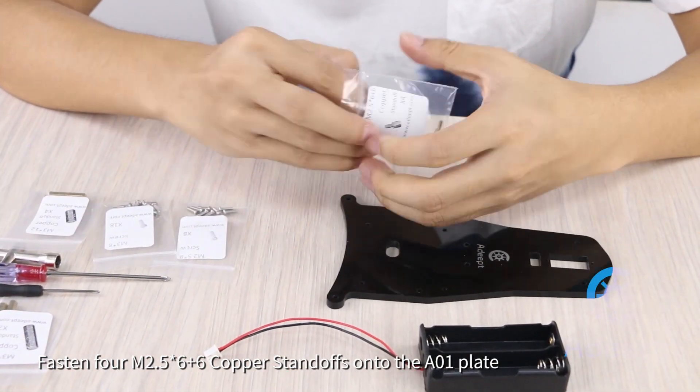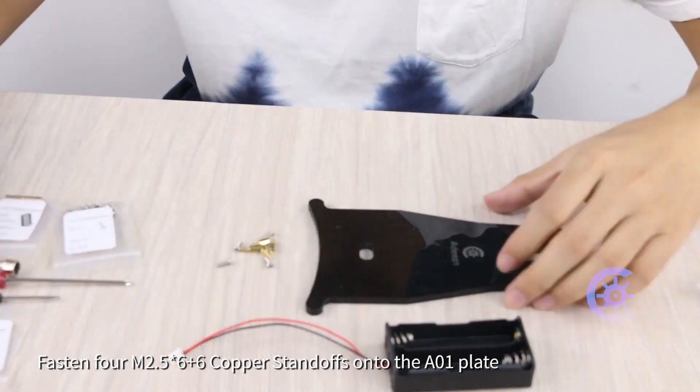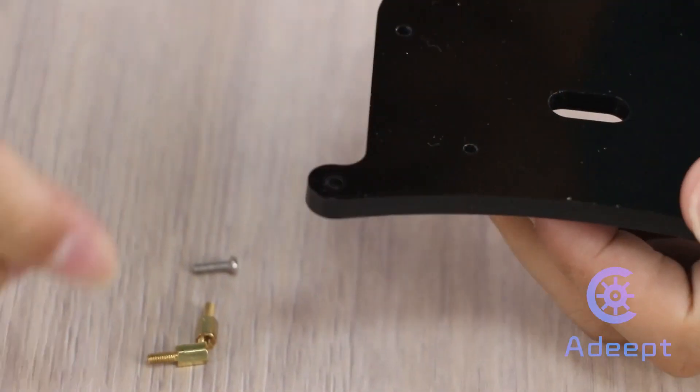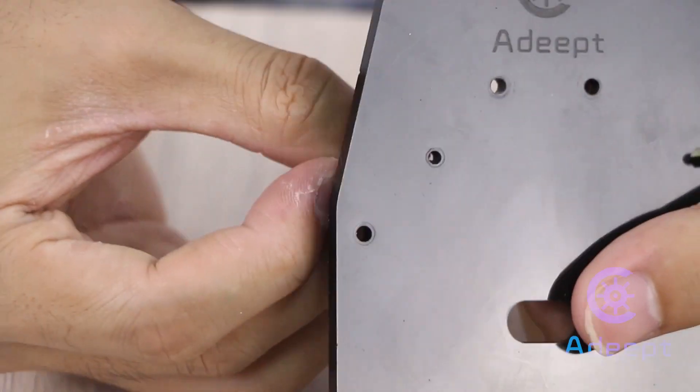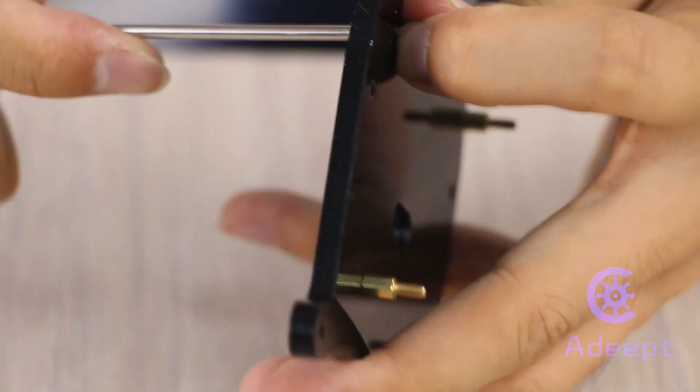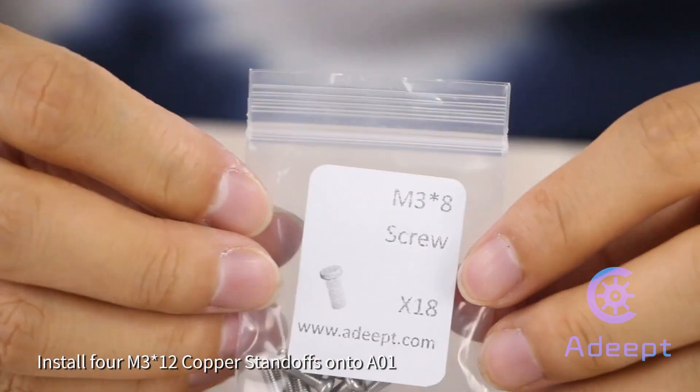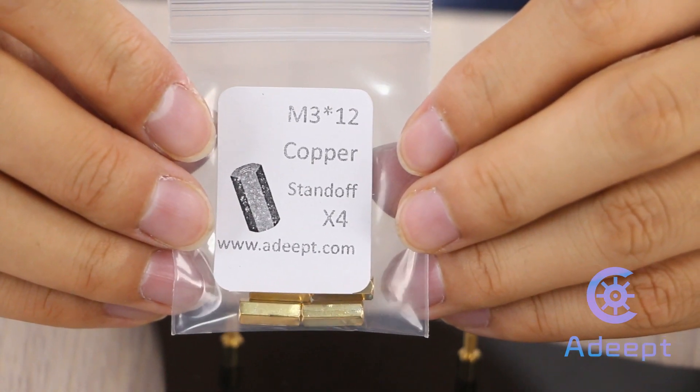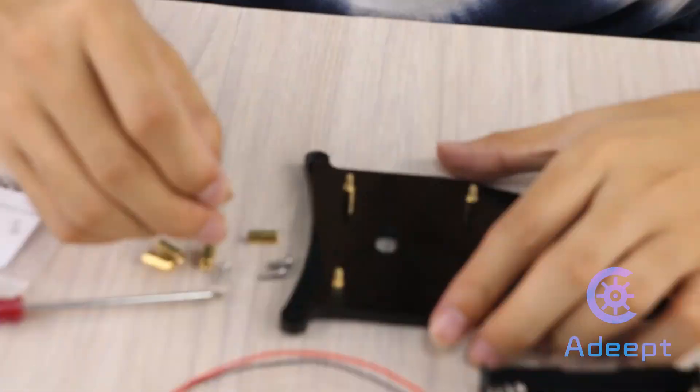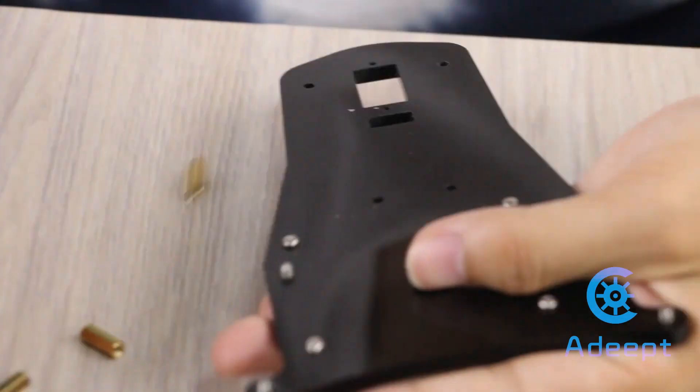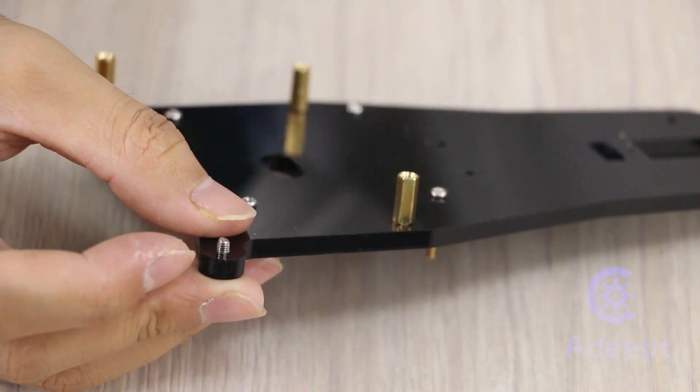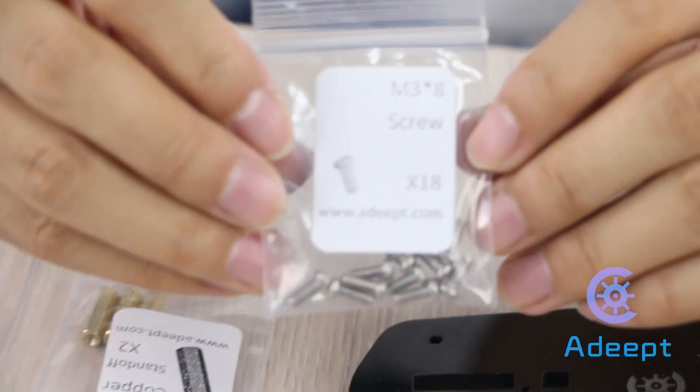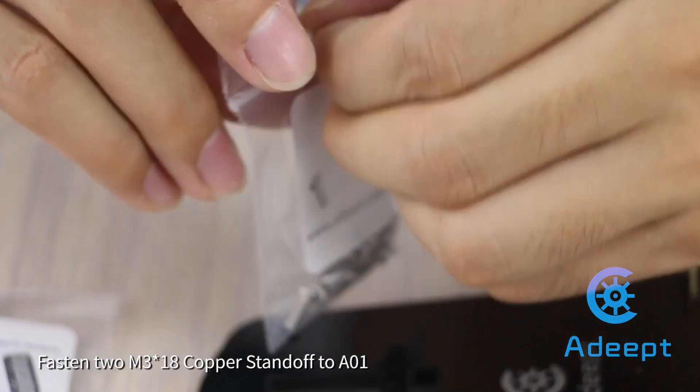Fasten four M2.5-6-plus-6 copper standoffs onto the A01 plate. Install four M3 multiple 12 copper standoffs onto A01. Fasten two M3 multiple 18 copper standoffs onto A01.